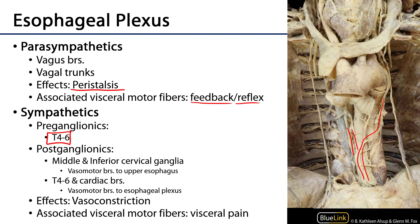The post-ganglionic fibers will come from a variety of sources. There will be some branches from the middle and inferior cervical ganglia, but most of those fibers will stay local and remain as vasomotor fibers of the paravascular plexuses along the inferior thyroid arteries.